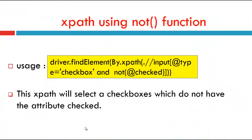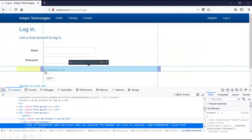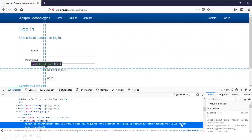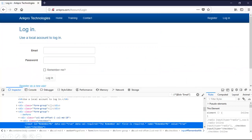XPath using not function. We use it like: driver.findElement(By.xpath("//input[@type='checkbox' and not(@checked)]")). This XPath will select checkboxes which do not have the attribute 'checked'. Here, if we inspect the checkbox and search for the attribute 'checked', it is not present — so we use the not function for that.